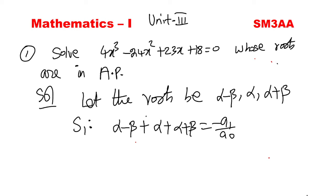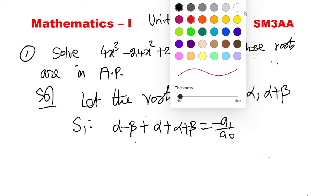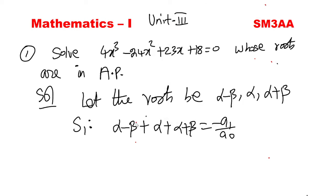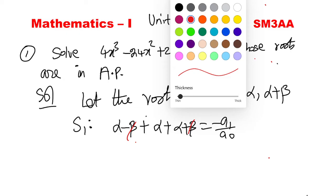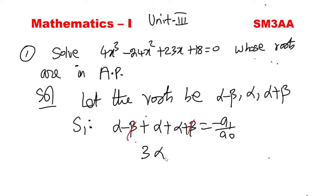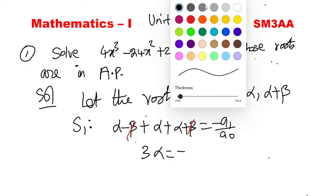When you add, the beta terms cancel out — minus beta plus beta cancels — so we are left with 3 alpha, which equals minus A1 by A0.